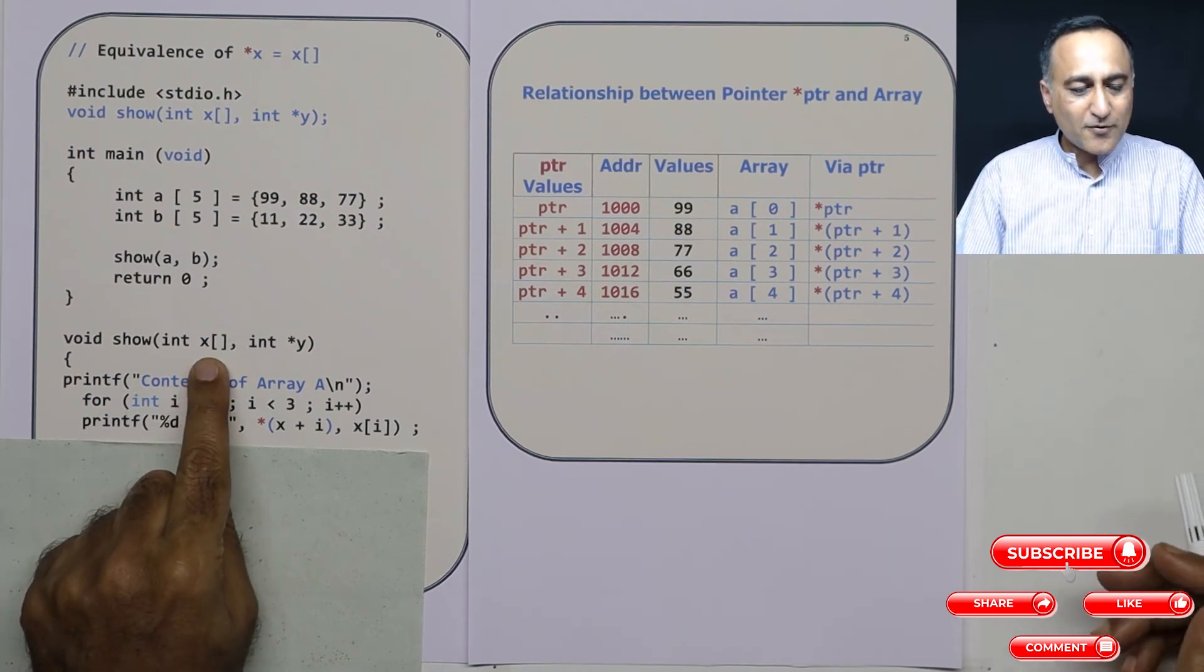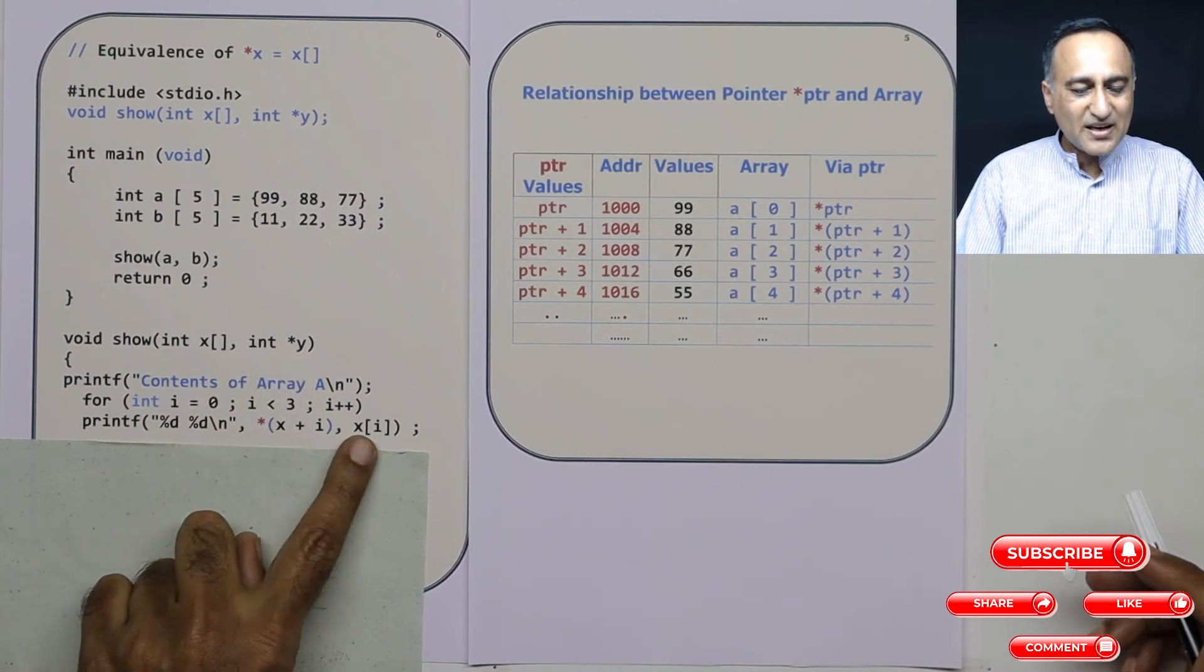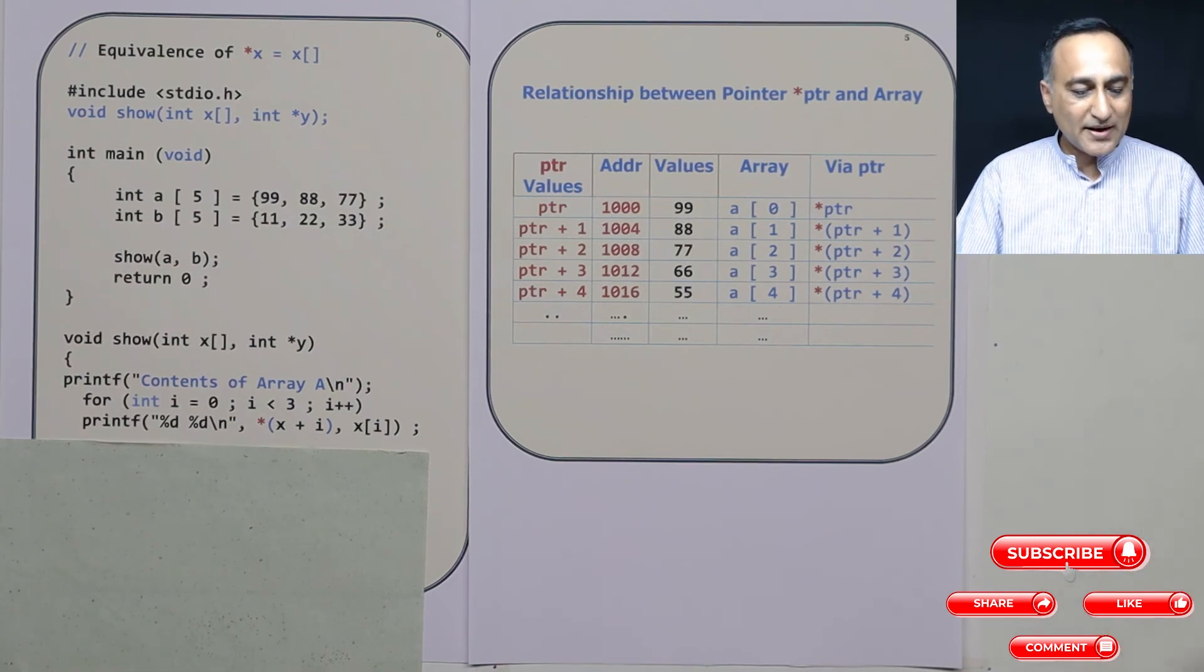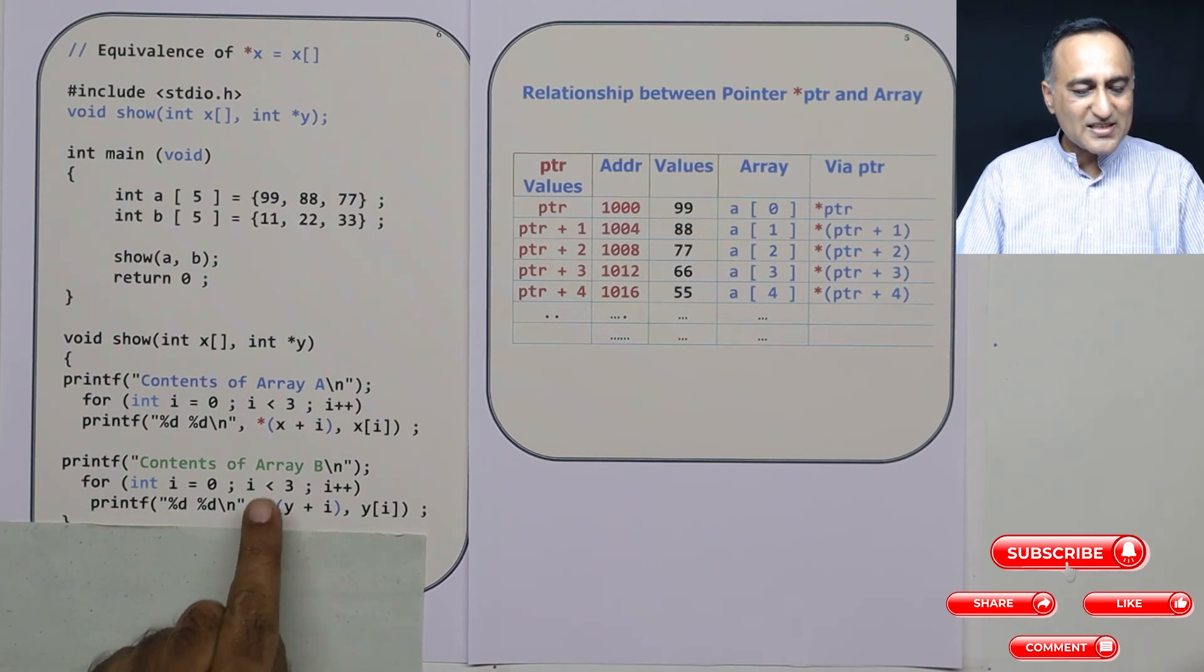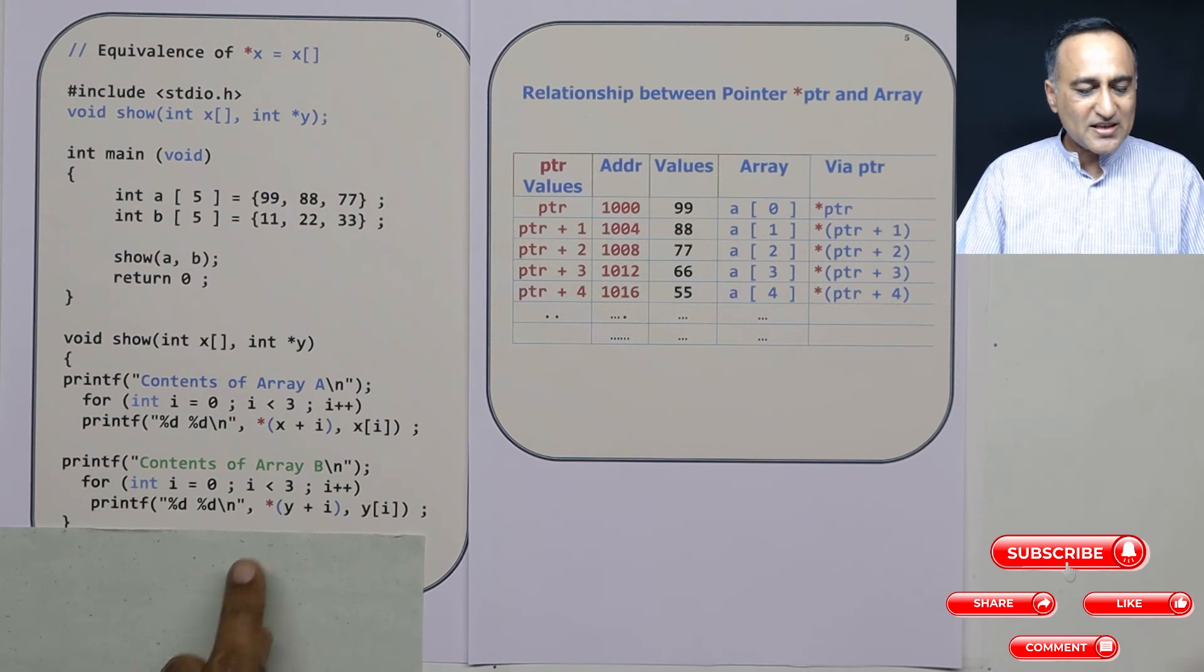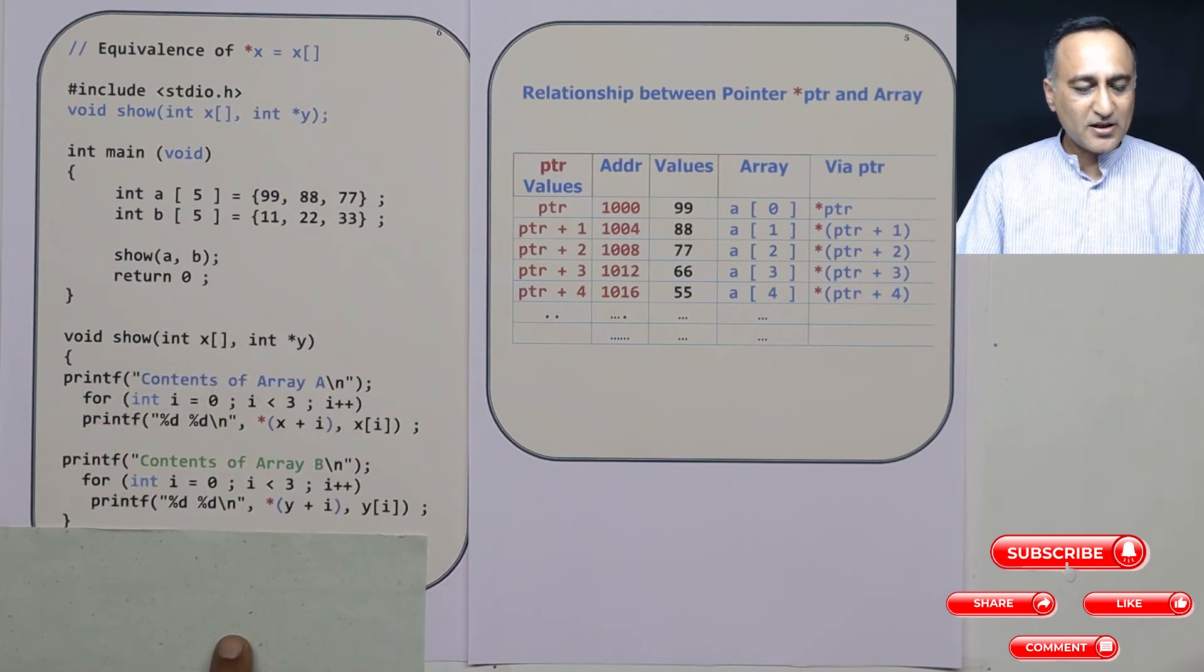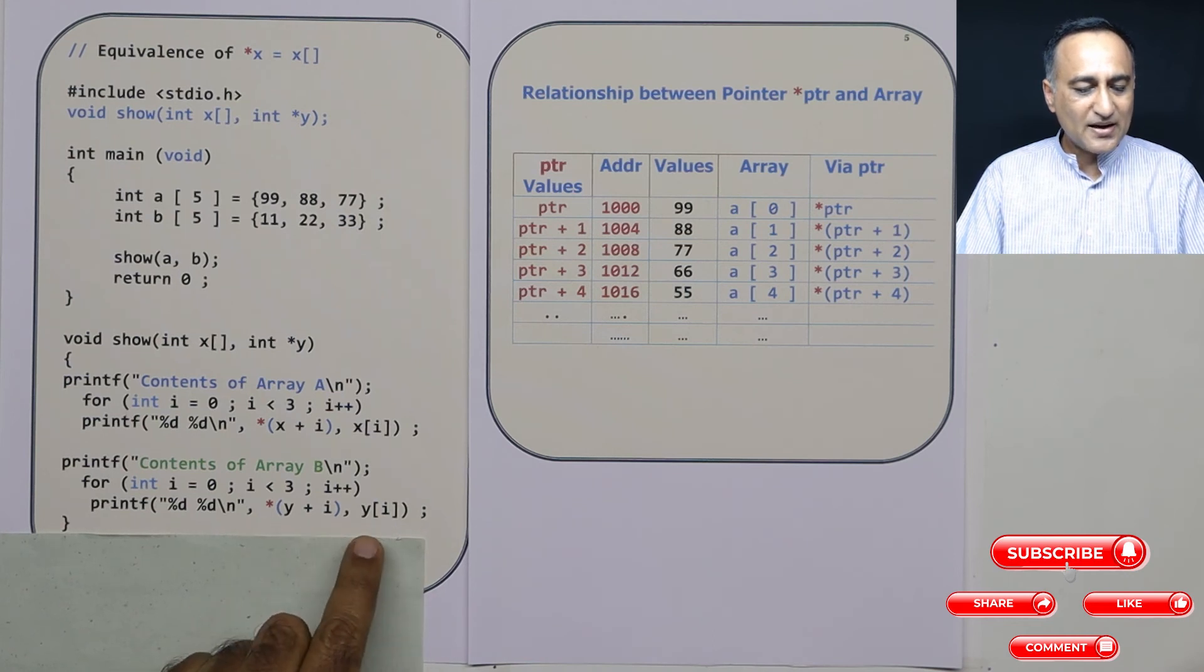Now since I told you this way of using an array parameter and this are the same, that means using something like this, I should be able to print array b also. Then only I can say both the things mean the one and same. So here what I am doing - if you see using y just as I used x here, I am able to print the content of array b. It will print 11, 22 and 33. And instead of saying star y plus i, if I say y of i also, it is going to print 11, 22 and 33. The moral of the story here: y of array operator i is the same as star y plus i. This fellow is internally converted into this.